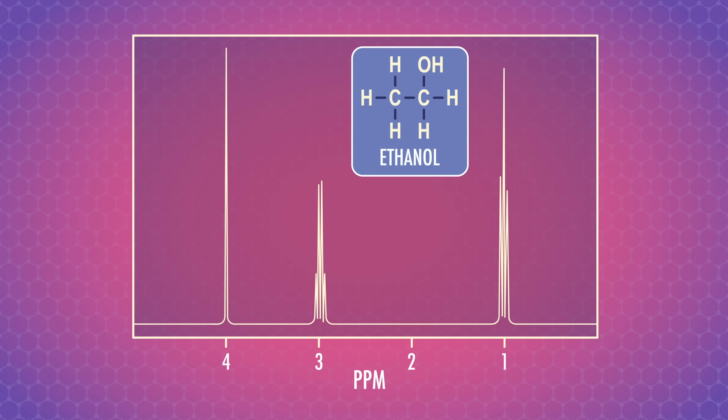So let's start with our most shielded peak. It's at about 1 ppm with an integral of 3, so we know it's the CH3 group. We're still practicing, so let's look at the structure of ethanol. The CH3 group is bonded to a CH2 group. There are two protons on the neighboring carbon that are coupled. This means n is 2. Using the n plus 1 rule, we can do 2 plus 1 equals 3, so the CH3 peak should be split into 3.